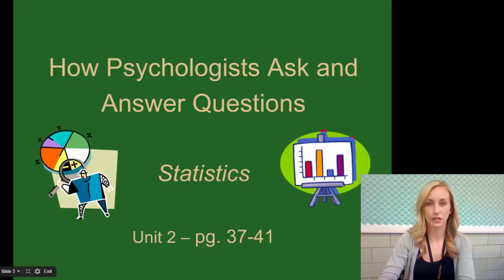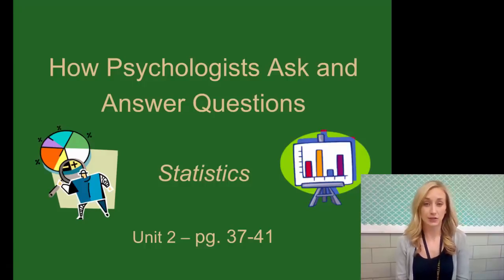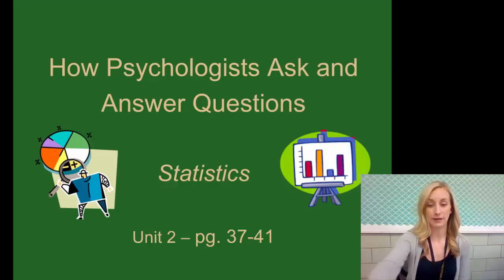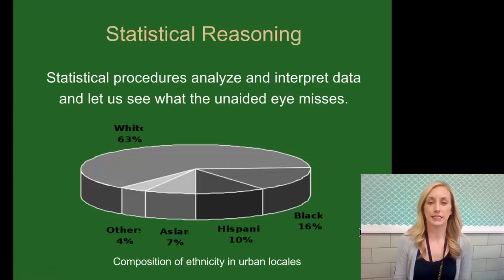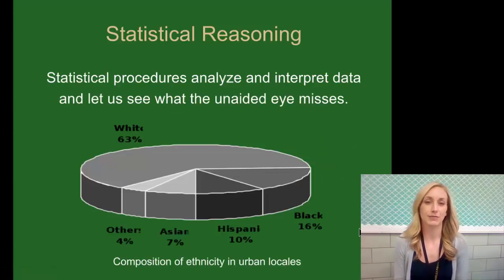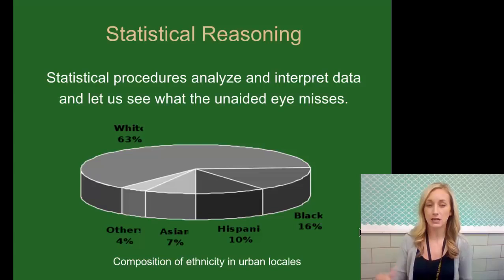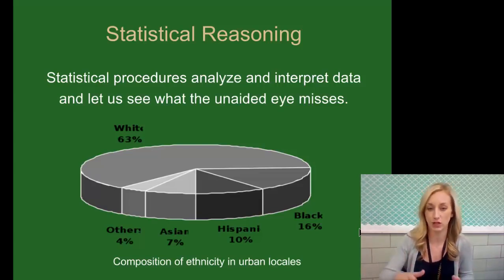Welcome to our last set of notes in unit 2 on research. We're going to talk about how psychologists ask and answer questions given their research and the statistics that they can then describe and infer from that research. Statistical procedures end up helping you to analyze and interpret data, and they let us see what the unaided eye might miss. You have all of this data, but statistics organizes it in a way that can be interpreted and give you more information.